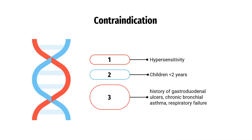Contraindications: children less than 2 years; patients with history of gastroduodenal ulcers, chronic bronchial asthma, or respiratory failure; patients taking concomitant medicines known to cause gastrointestinal bleeding. It is not recommended to be concomitantly used with antitussives and/or medicines that dry up bronchial secretions.